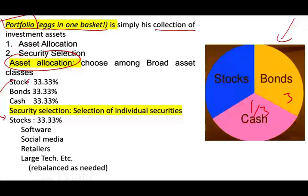Over time, if stocks went up in value, they're going to eat up the percentage of our portfolio — therefore we rebalance the portfolio as necessary. Within stocks, if we invested 10% in tech within that 33%, and that percentage increased, we need to sell our gains and maybe move them to cash or bonds to rebalance. How do we conduct security selection? We have two approaches: the top-down approach and the bottom-up approach.